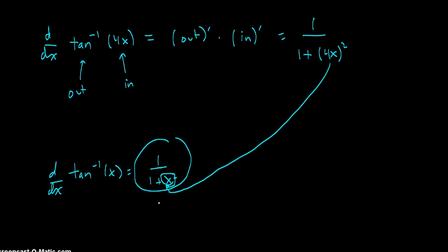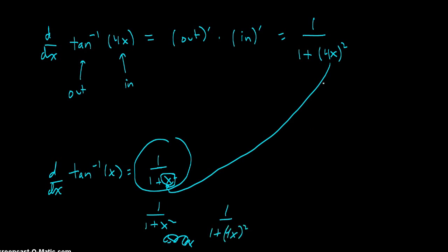So instead of 1 over 1 plus x squared, we have 1 over 1 plus 4x squared. And it's important to put that 4x in parentheses because that's going to make a difference as we shall see.